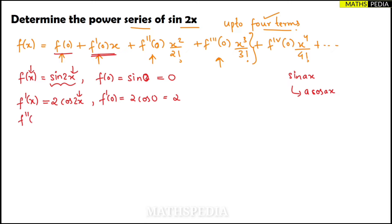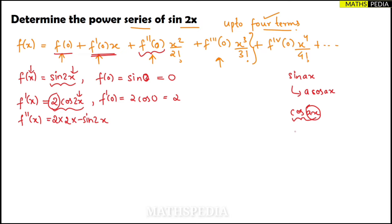Next, for the second derivative f''(x): differentiating 2cos(2x), we keep the constant 2 and differentiate cos(2x). The rule is that differentiation of cos(ax) is −a·sin(ax), so the result is 2·(−2·sin(2x)) = −4sin(2x).